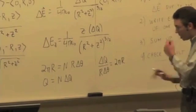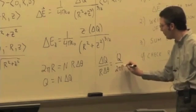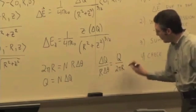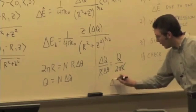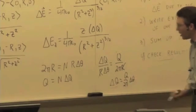I get delta q over r delta theta is equal to q over 2 pi r. Radius cancels out on both sides, and so we can say delta q is equal to q over 2 pi times delta theta.